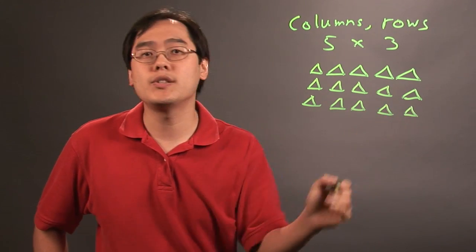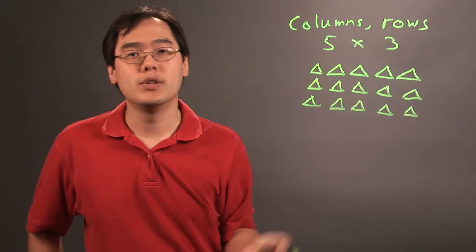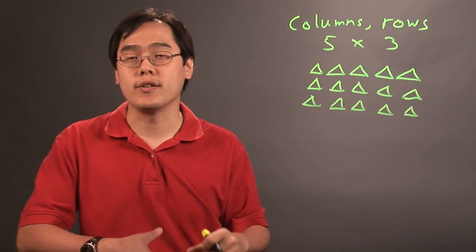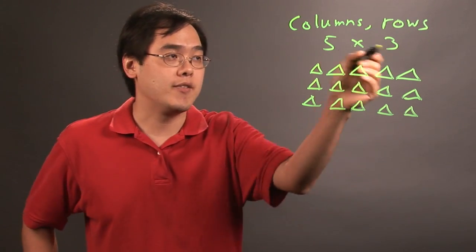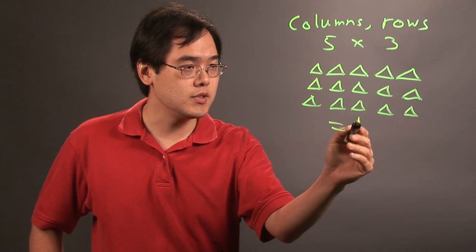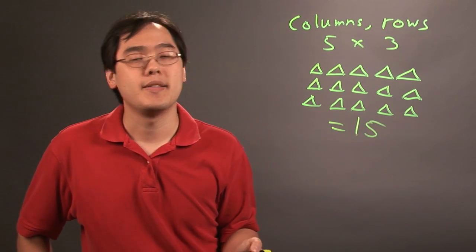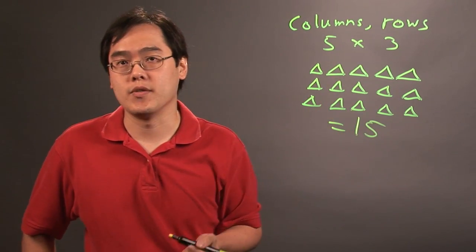What this allows you to do is count the total that's there, so you can get an idea as to what five times three is going to be. As you can tell, since there's 15 triangles, that means five times three is going to give you 15.